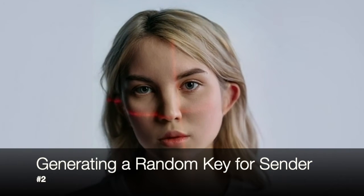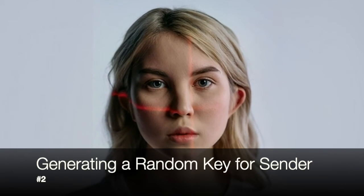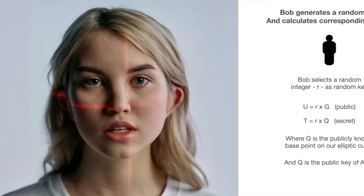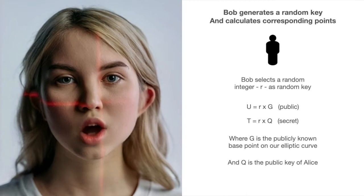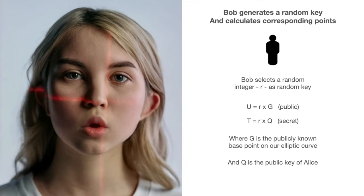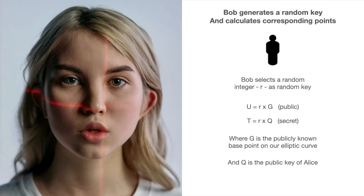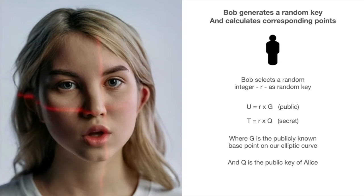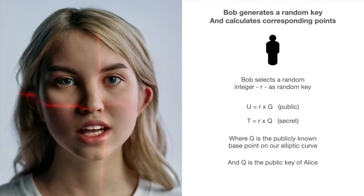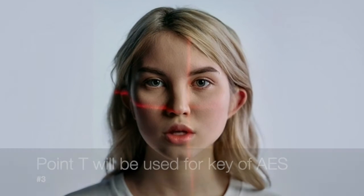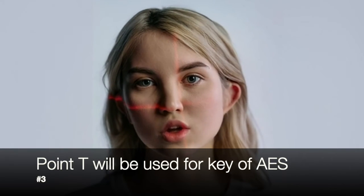The recipient keeps their private key d secret while sharing their public key Q with others who wish to send them encrypted messages. To send an encrypted message, the sender generates a one-time secret key by selecting a random integer r and computing two elliptic curve points: U = r × G and T = r × Q. U is the sender's public key, which they will send to the recipient, while T is kept secret.